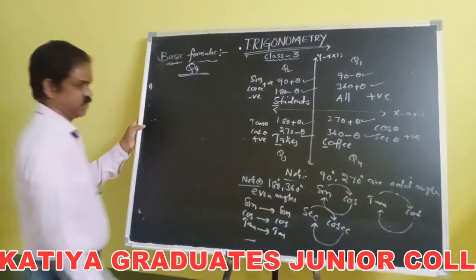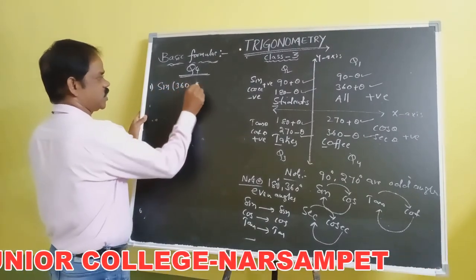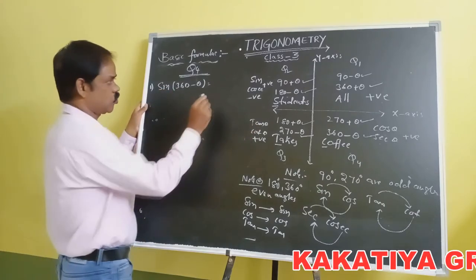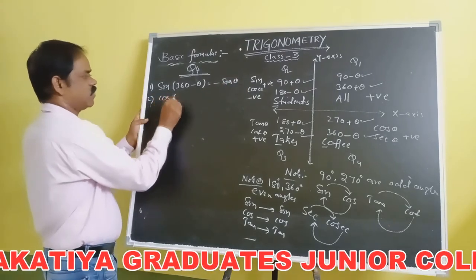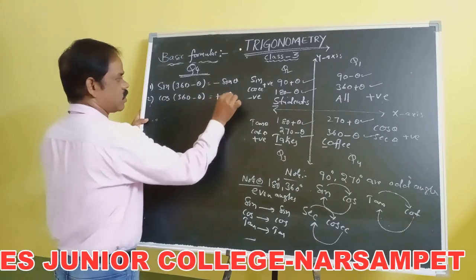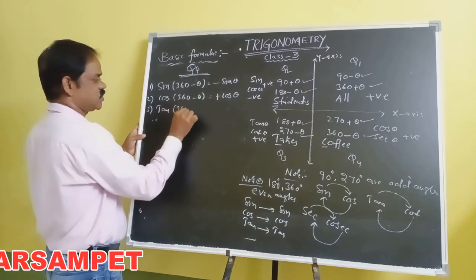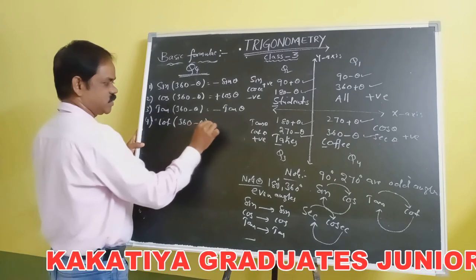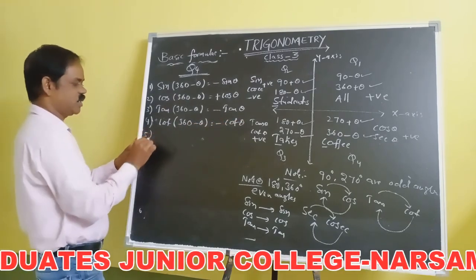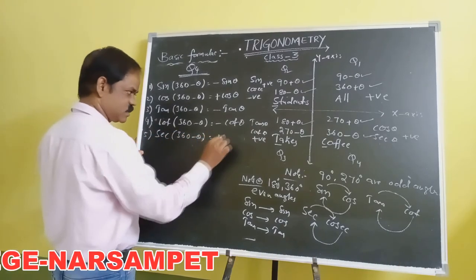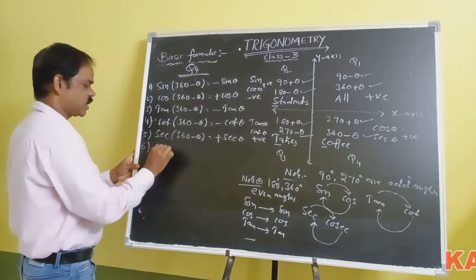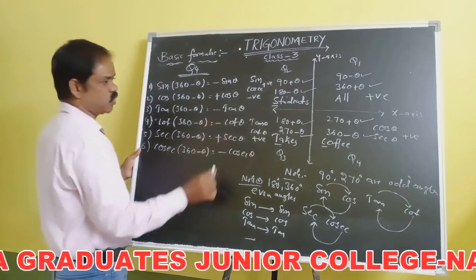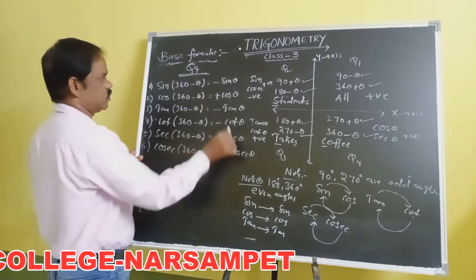Consider 360 − θ. Since 360 is even, the ratio does not change. Sin(360 − θ) = minus sin θ, because sin is negative in the fourth coordinate. Cos(360 − θ) = plus cos θ. Tan(360 − θ) = minus tan θ. Cot(360 − θ) = minus cot θ. Sec(360 − θ) = plus sec θ. Cosec(360 − θ) = minus cosec θ. In the fourth coordinate, cos and sec are positive, and the remaining four are negative.